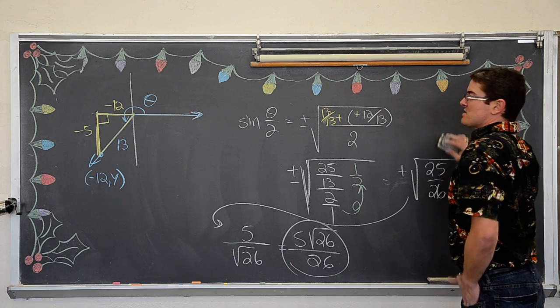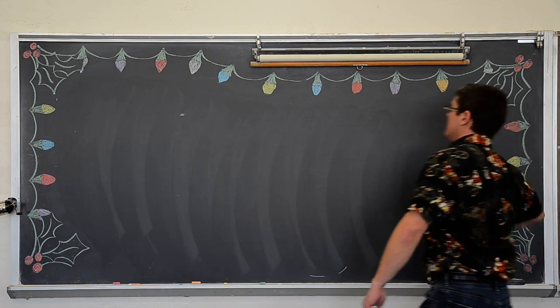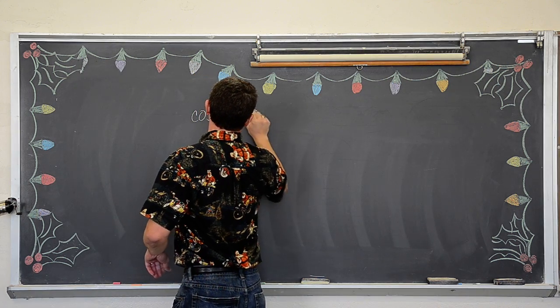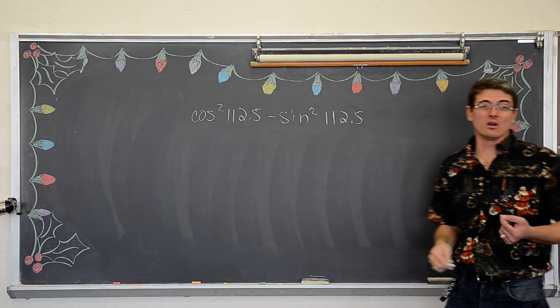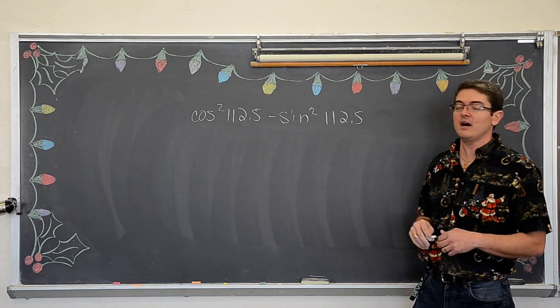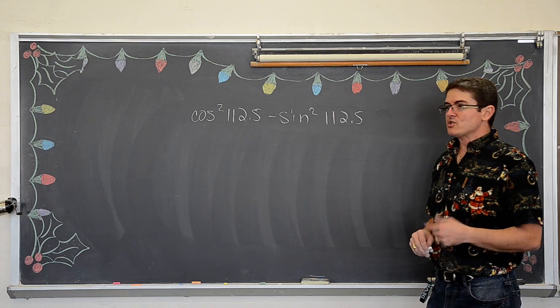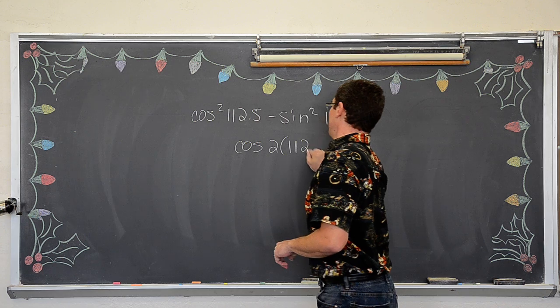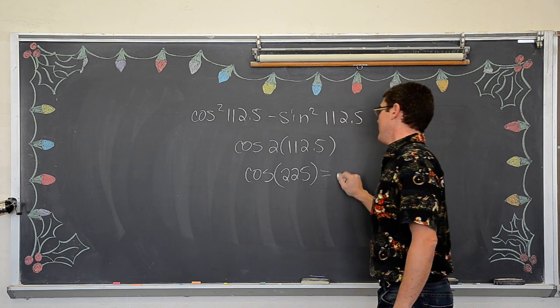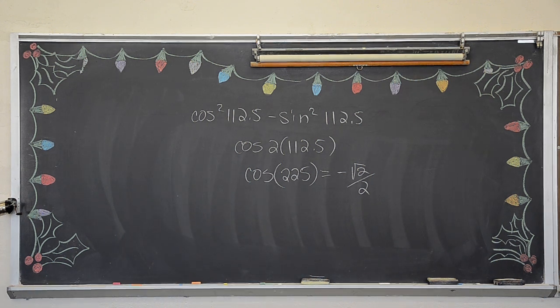One more example, and really quick and we will call it a day. For evaluating trig functions, in the next video we will be doing proofs. The last example is, like some indifference angles, when they give you something straight off the unit circle or with numbers, it is probably because it does not work in this form. But if you recognize the cosine squared minus the sine squared is your double angle for cosine, this is the cosine of 2 times 112.5 which is the cosine of 225. Well the cosine of 225 is negative square root of 2 over 2. So BAM! Go to your homework or watch the video about the proofs. Thank you!